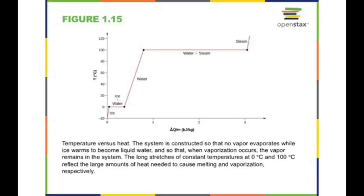Looking at a graph of temperature vs. quantity of heat for water: at negative 20°C we have ice. When you start heating ice at negative 20, the temperature rises until it reaches 0°C — the melting point. At 0°C, even if you continue heating, there is no change in temperature until all the ice has melted. The heat is going into changing the state — this is a phase change.